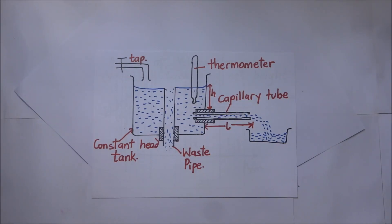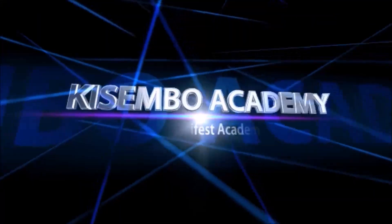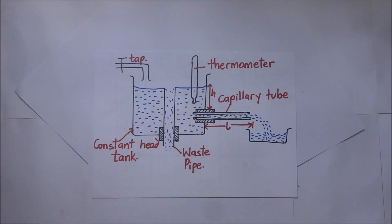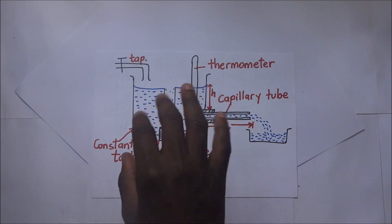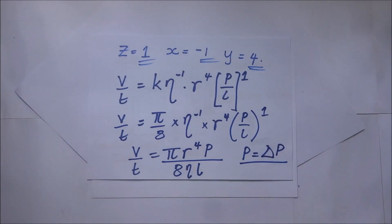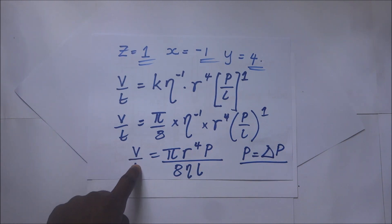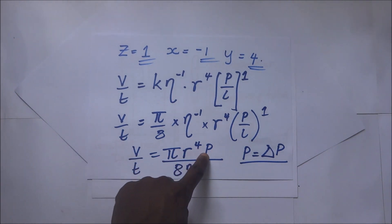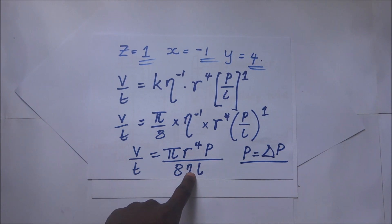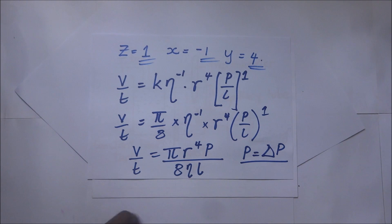This is an experiment to determine the coefficient of viscosity using Poiseuille's formula — a formula derived in a previous session. From that derivation, the volume flow rate Q is given by πr⁴P divided by 8 times the coefficient of viscosity times the length L. What we want from this experiment is to find the coefficient of viscosity using this formula.